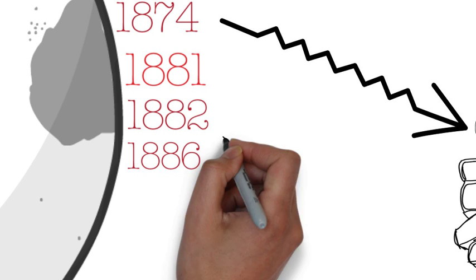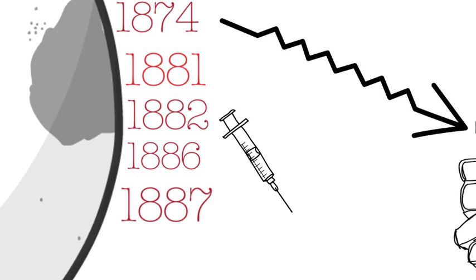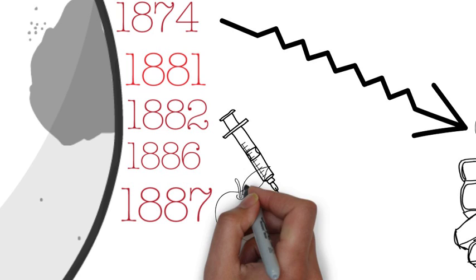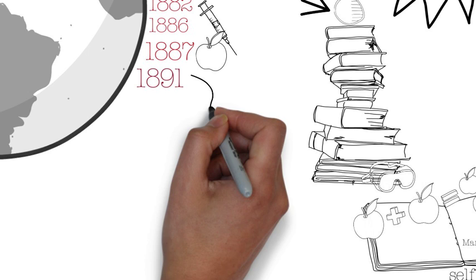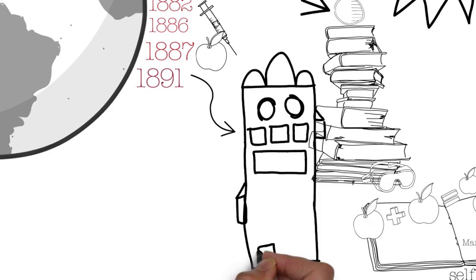In 1886, smallpox vaccine was introduced. And in 1887, Winnipeg General Hospital was the first training school for nurses in Western Canada. In 1891, Vancouver General Hospital School of Nursing opened.